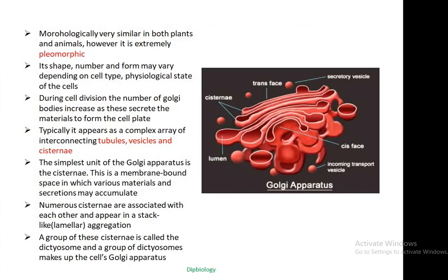Morphologically, the Golgi body is similar in both plants and animals. However, it is extremely pleomorphic in nature. Pleomorphic means its shape, number, and size may vary depending on cell type and also the physiological state of the cell. During cell division, the number of Golgi bodies increases as they secrete materials to form the cell plate, which is important for cell formation.